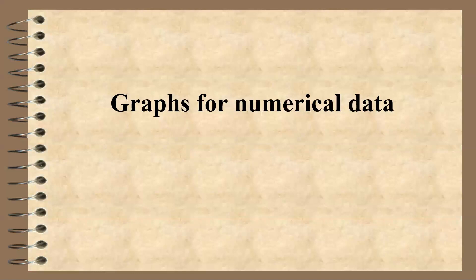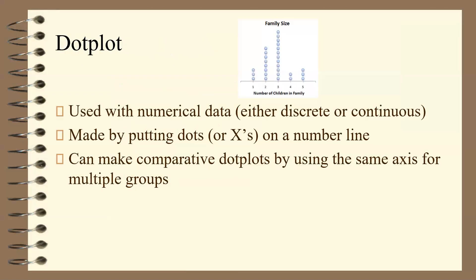Now for numerical data. One option is a dot plot, used with numerical data — either discrete or continuous. It is made by putting dots or x's on a number line. Make sure to label the axes: for example, 'number of children in family,' and count by ones. You can also make a comparative dot plot by using the same axis for multiple groups.